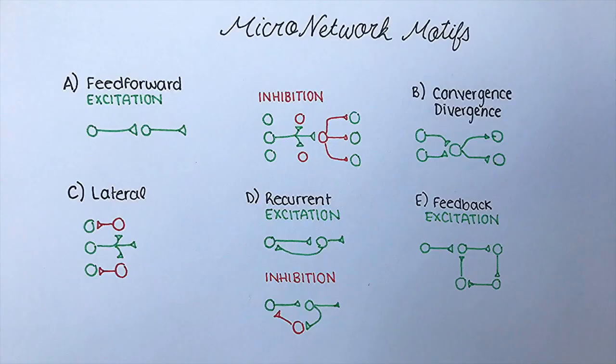Now that we've established the characteristics of the neurons themselves, let's look at how these individual building blocks can be combined to establish small circuits called motifs. Here you can see the motifs.